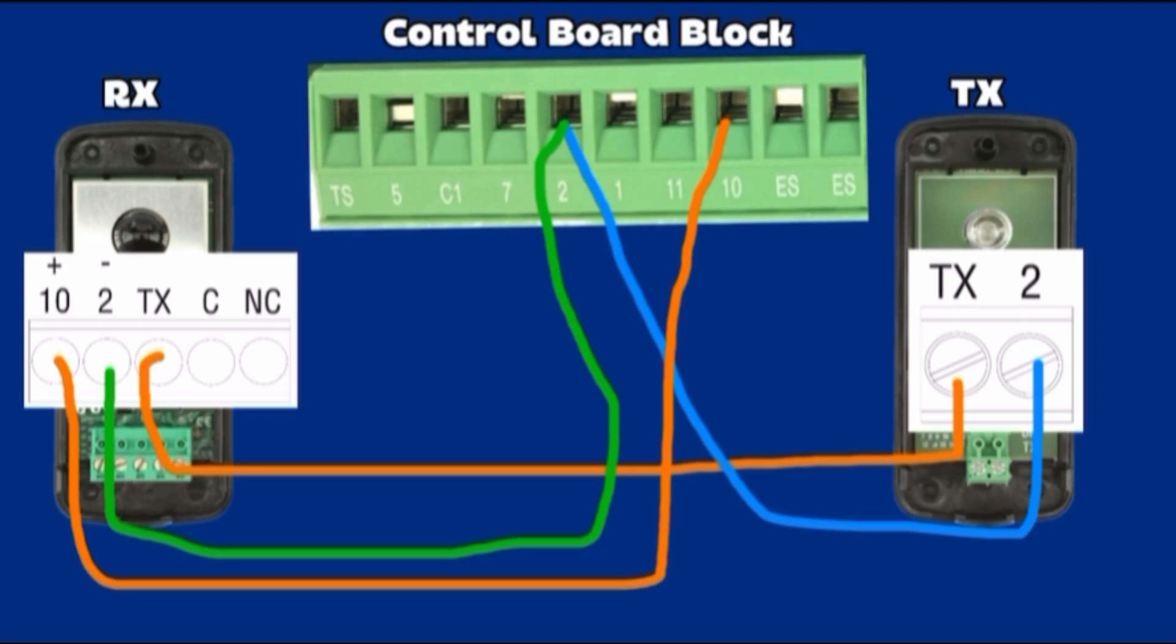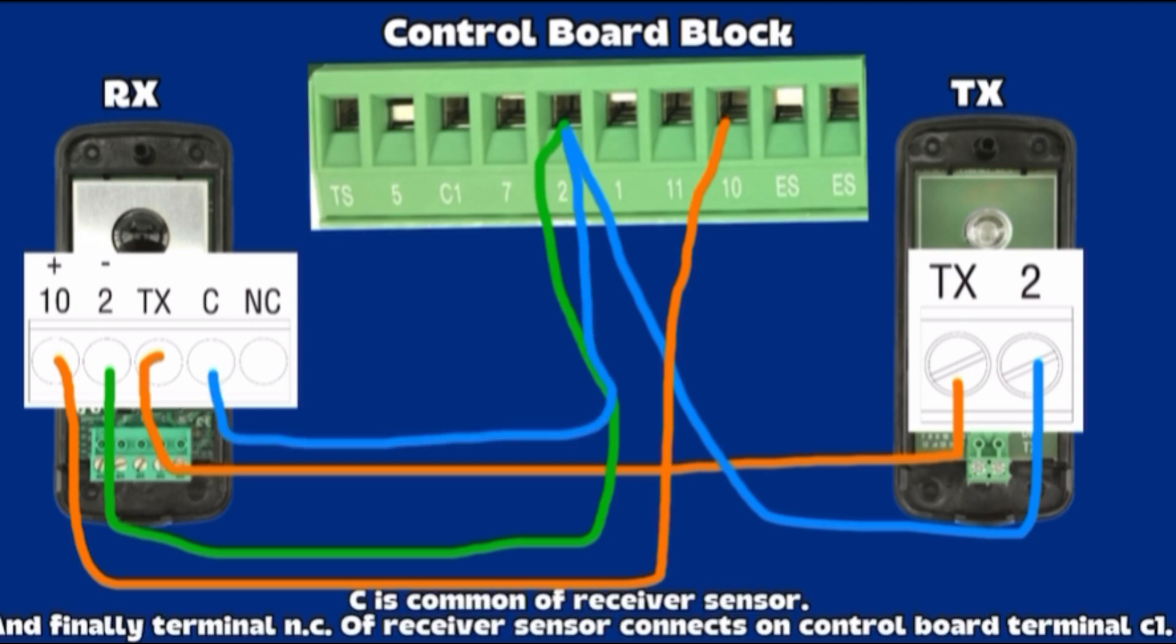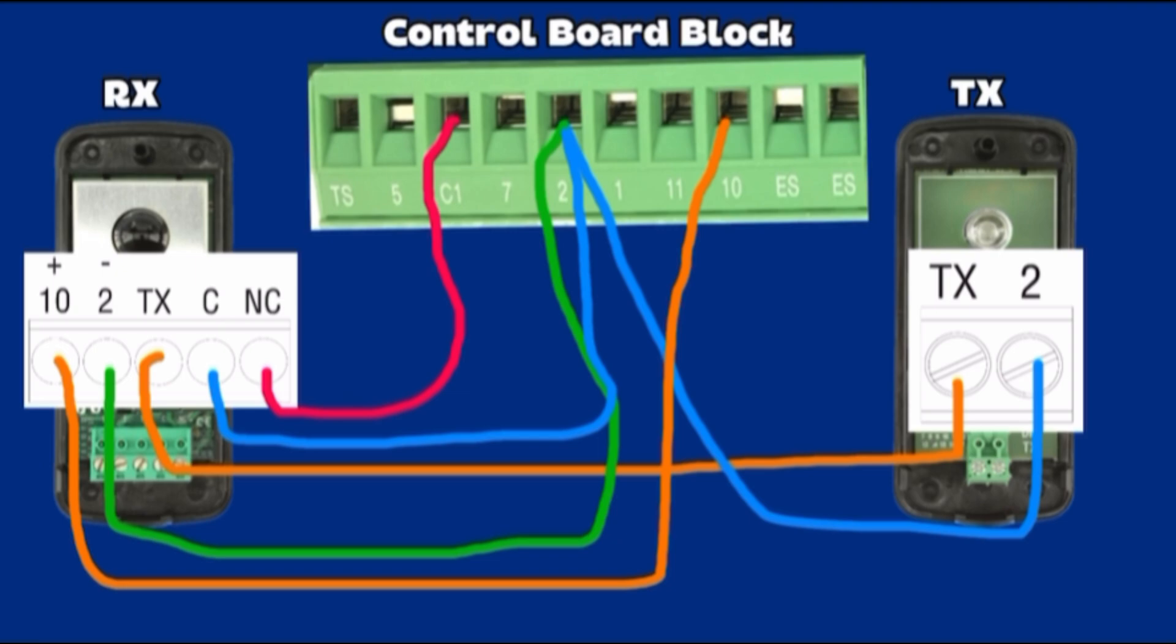Terminal C on receiver sensor connects on control board Terminal 2. C is common of receiver sensor. And finally Terminal NC receiver sensor connects on control board Terminal C1. C1 is NC contact for reopening while closing. Input for safety devices like photo cells, sensitive edges and other devices. While the door is closing, opening the contact will invert movement until it is fully opened.